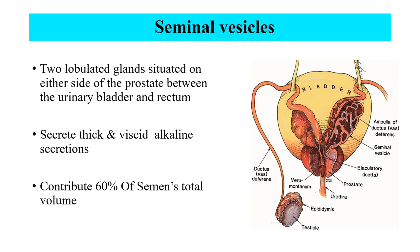The seminal vesicles are paired secretory glands located on either side of the ampulla of the ductus deferens, between the urinary bladder and rectum. They secrete thick, viscid alkaline secretions and contribute 60% of semen's total volume. This fluid contains fructose, phosphorylcholine, and citric acid, which provide energy for movement of sperm. Ascorbic acid and hyaluronidase enzyme split mucopolysaccharides so sperm can penetrate the cervical mucus plug.